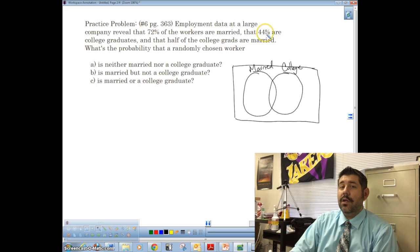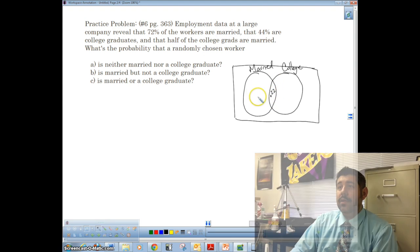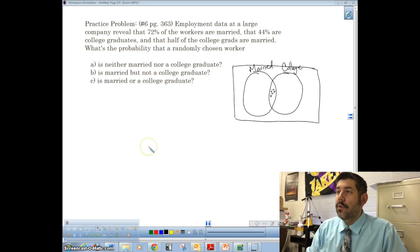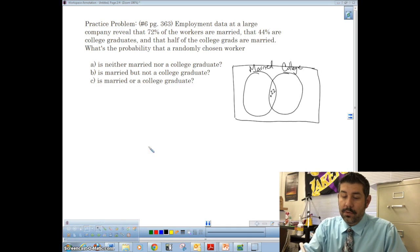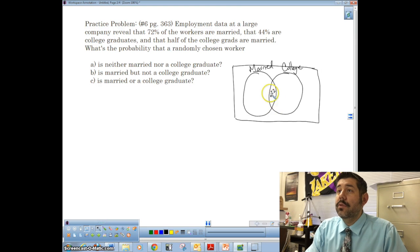So if 44% are college grads, half of that's 22%. So we've got 22% in the middle. Okay. Um, if 22% here, all right, so, this is 0.22 and 0.22 here.